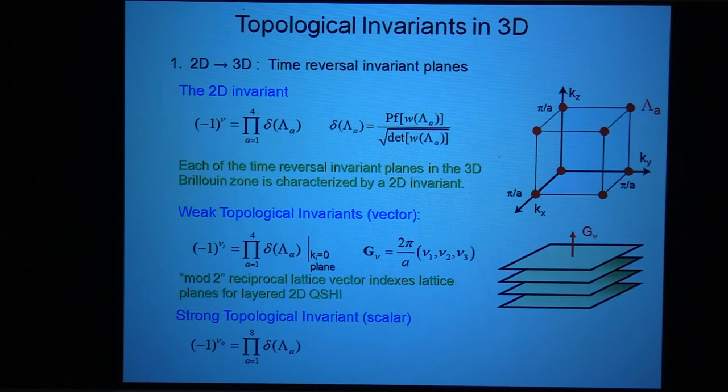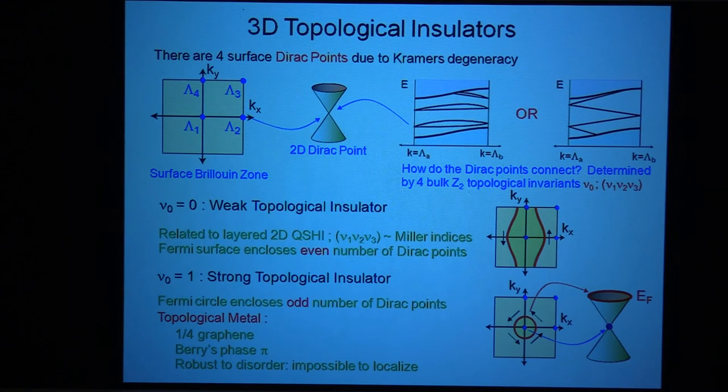When you say with topological insulator, it's still fairly robust, like perturbations, right? You can actually move the Dirac cones to each other for this, but is that still? Which Dirac, you're talking about these Dirac cones? Yeah. No, they can't move because they are guaranteed by time reversal symmetry. They're stuck where they live.